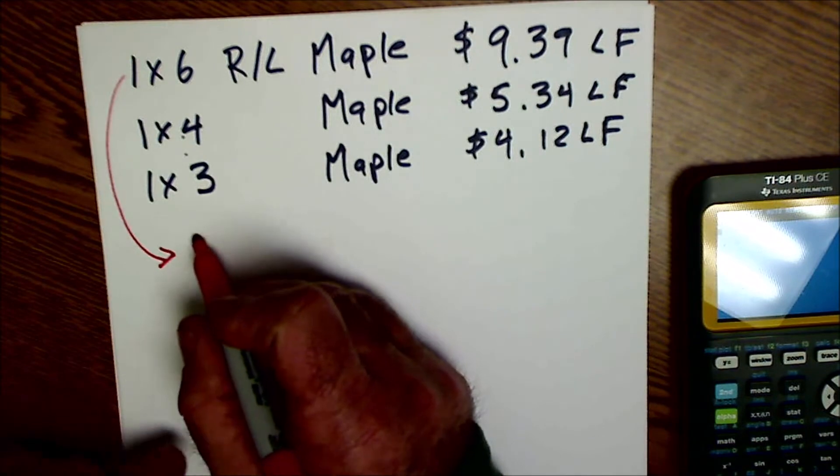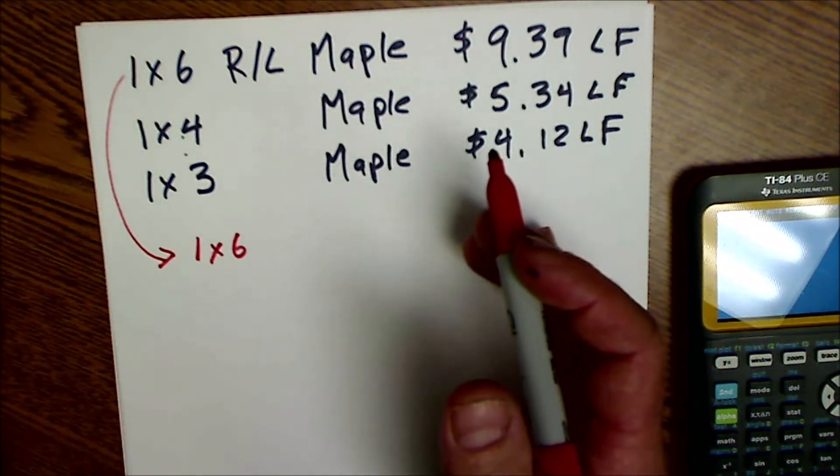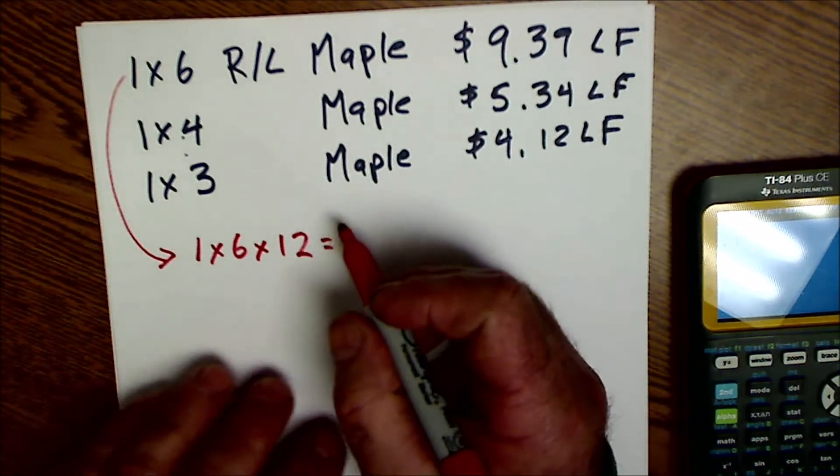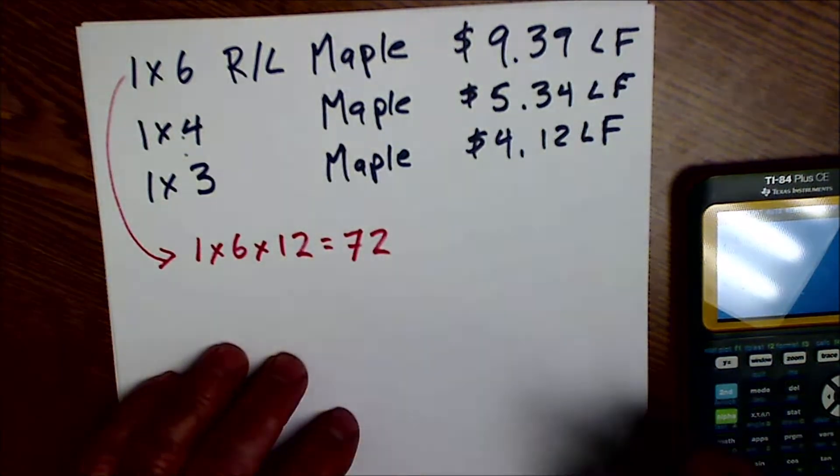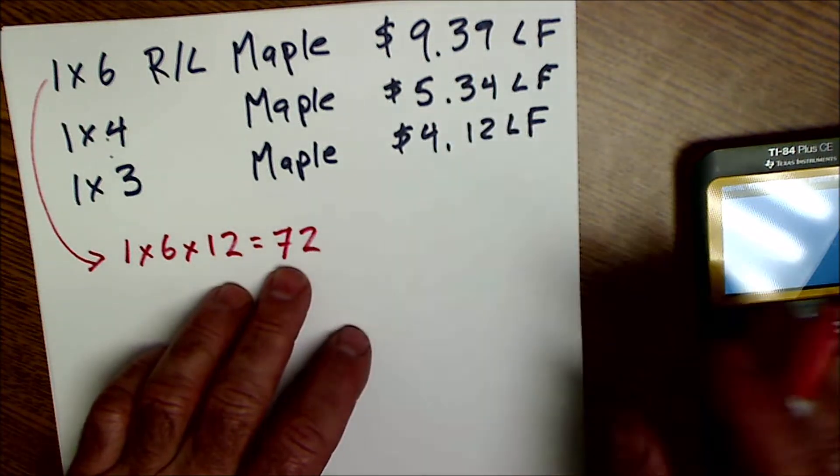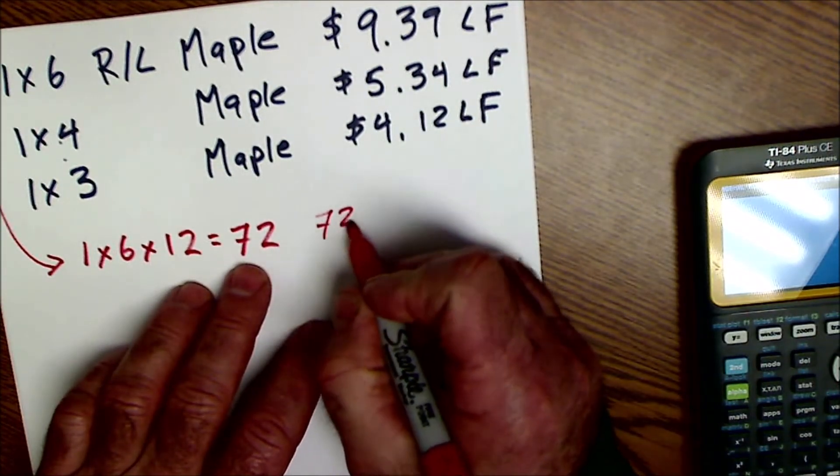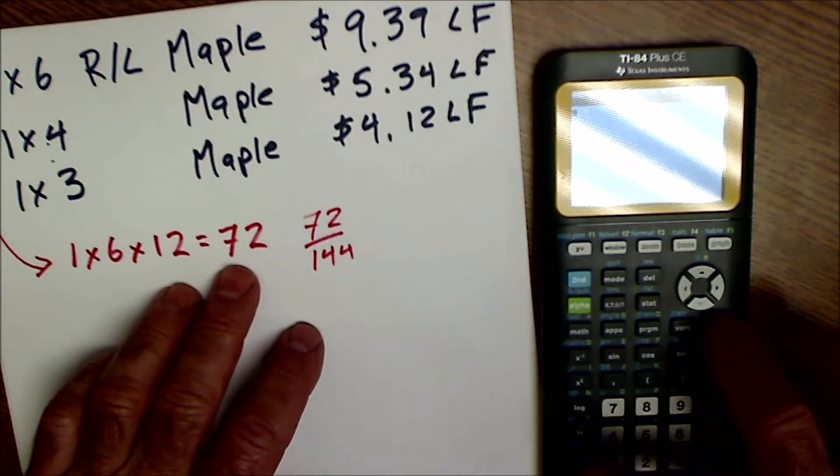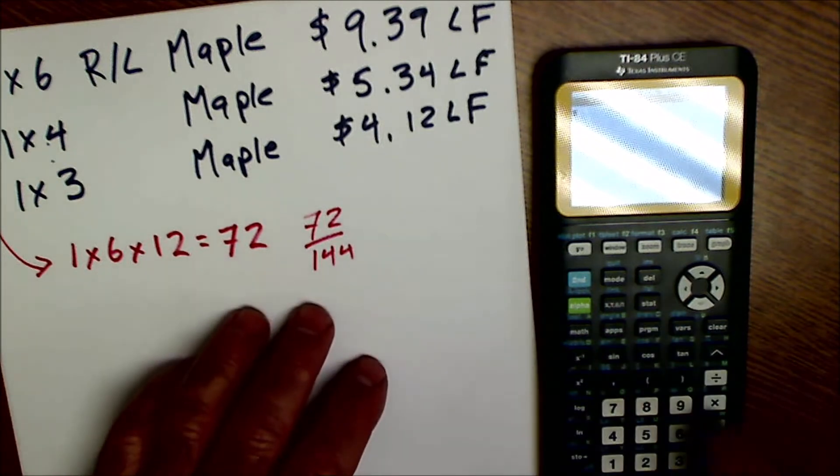Let's look at this first one. So if it's 1 by 6 and we're looking for a length of a foot, we're going to multiply it by 12, and we're going to get 72 cubic inches. One linear foot is 72 cubic inches. We're going to take that 72, divide it by 144, and that's how many board feet a linear foot is.